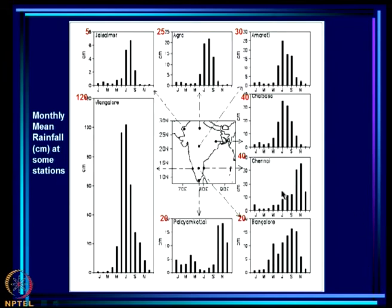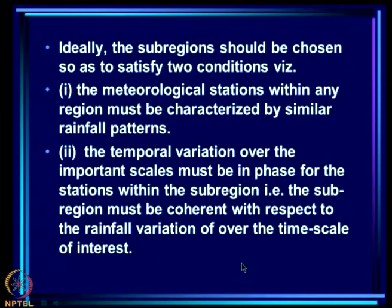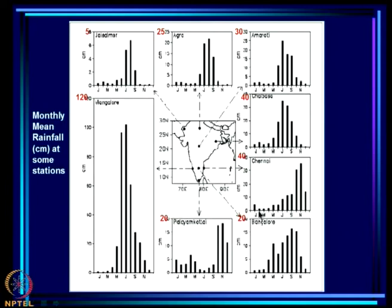If you look at the rainfall pattern of a place like Chennai, most of the rain occurs in October-November, although IMD has declared that rainfall begins around June. There is hardly any rain in June, and the sharp increase only occurs in October-November. Yet if we went by the definitions of onset and retreat, we would have a very long rainy season. This suggests that we need to take a relook at the definition of rainy season.